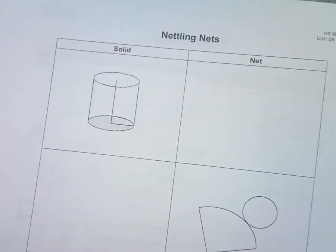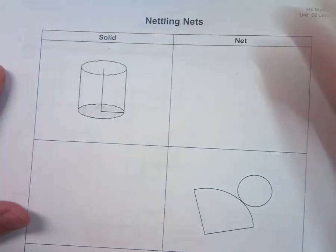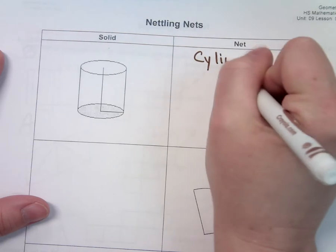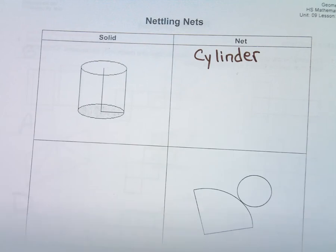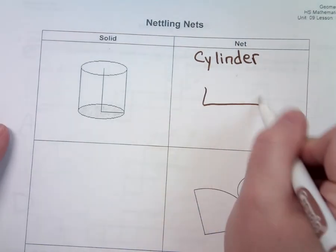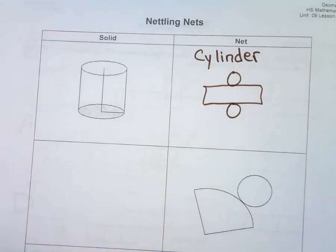This time they gave us the solid — a cylinder. So I'm going to write cylinder. And this time we want to draw the net. We've got our rectangle and then we have our two circles. This net could look differently; it doesn't always look exactly like that.